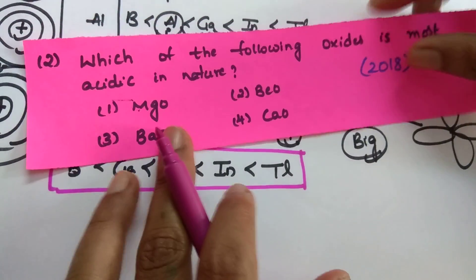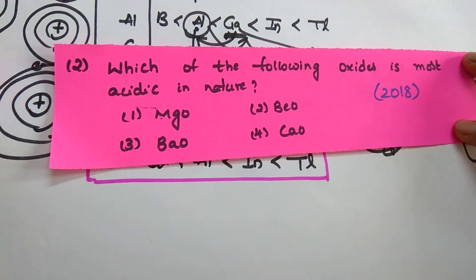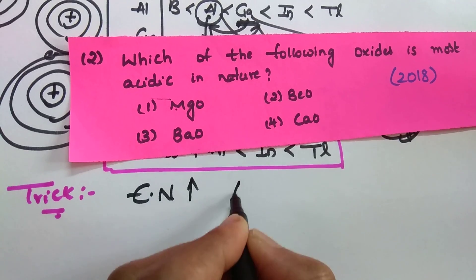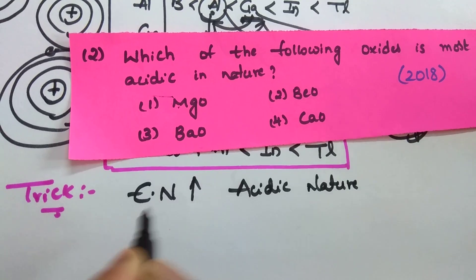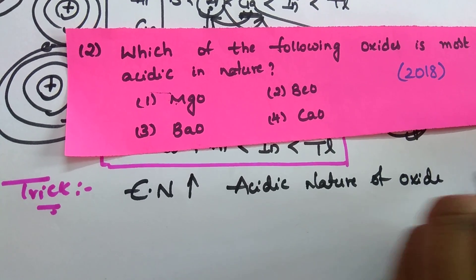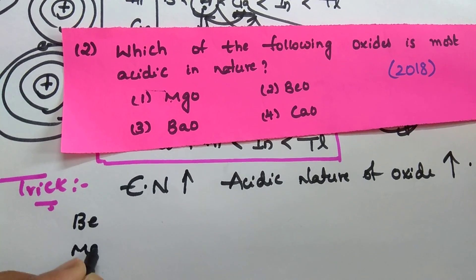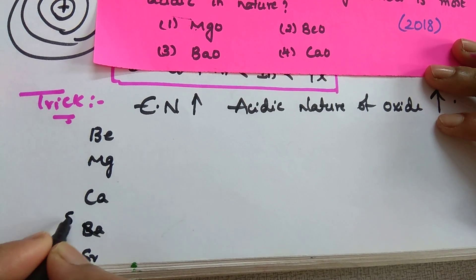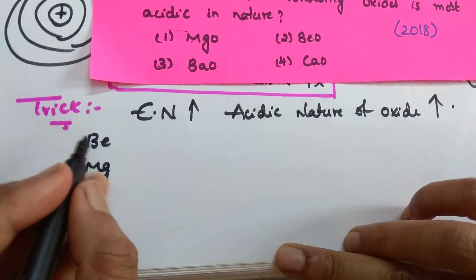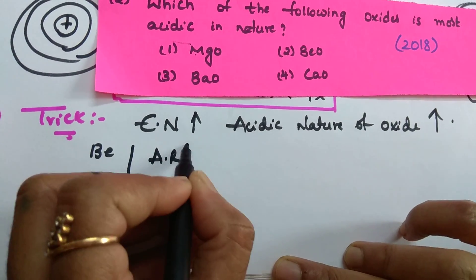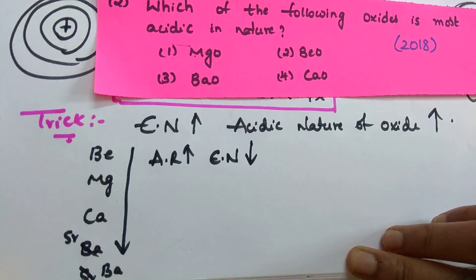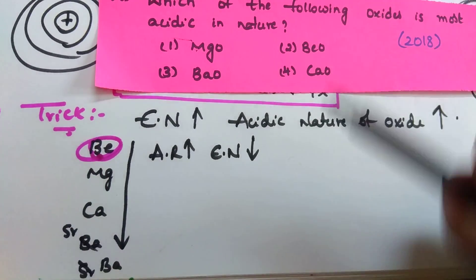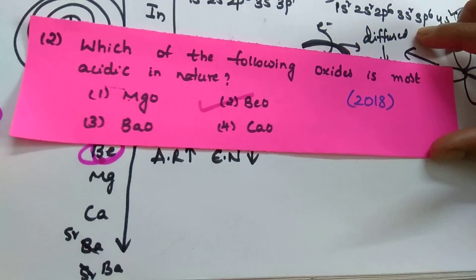Let us see the next question. Which of the following oxides is more acidic in nature? Here is a small trick: as the electronegativity of the central atom increases, the acidic nature of its oxide also increases. In group 2, beryllium, magnesium, calcium, strontium, barium - going down the group, atomic radius increases, so electronegativity decreases. Beryllium has the smallest size and highest electronegativity, so beryllium oxide has the most acidic nature.